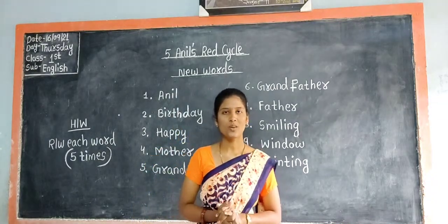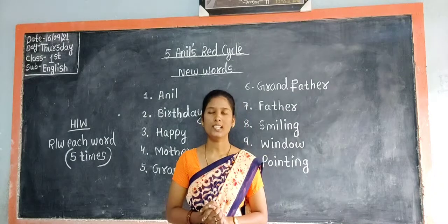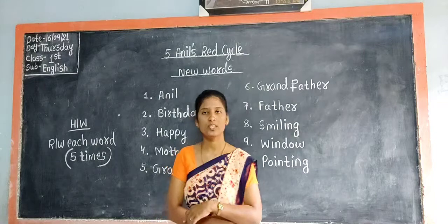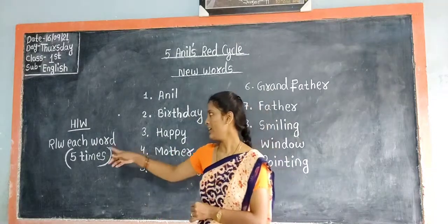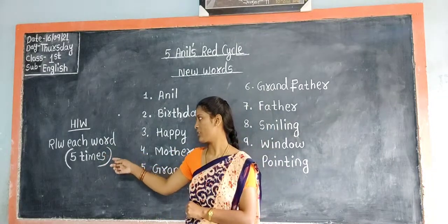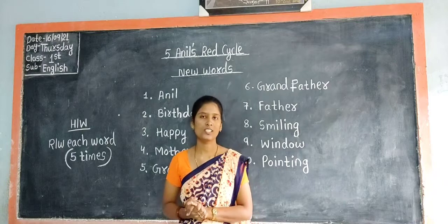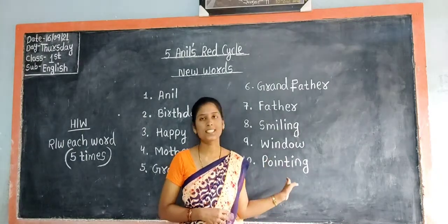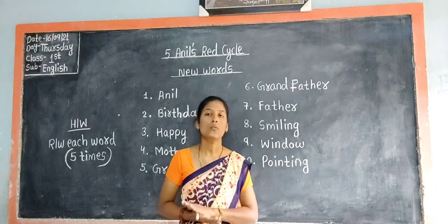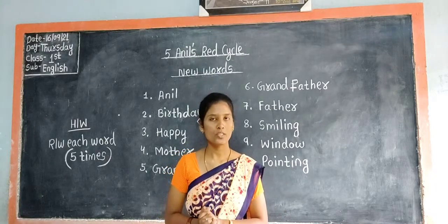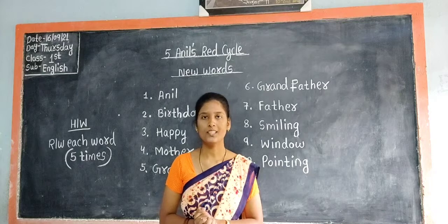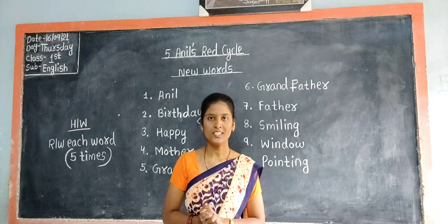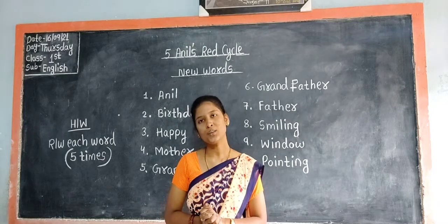Okay children, that was all about today's class. Now let us move towards today's homework. Today's homework is to read and write each word five times. You have to read and then write these ten new words five times in your homework notebook, and also read the lesson once. Okay children, thank you.